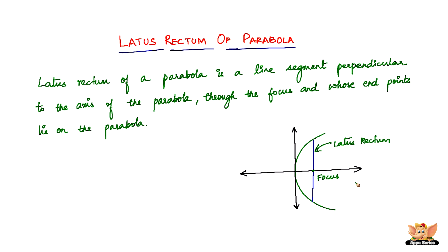Here is the definition of the latus rectum: the latus rectum of a parabola is a line segment perpendicular to the axis of the parabola, through the focus, and whose endpoints lie on the parabola. This blue line shown here is the latus rectum, and it is definitely at a right angle to the axis of the parabola, which satisfies this definition. It is also through the focus, and the endpoints of the latus rectum lie on the parabola itself.